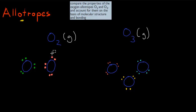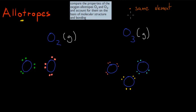So what is an allotrope? Well, an allotrope has to have the same element, and it has to have the same state. So two versions of the same element that are also in the same state. I'll quickly go over an example of this.